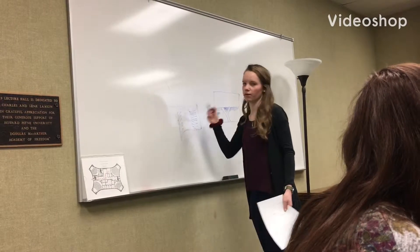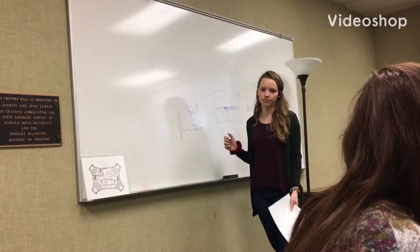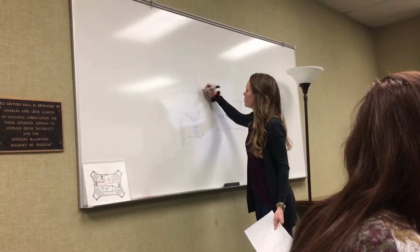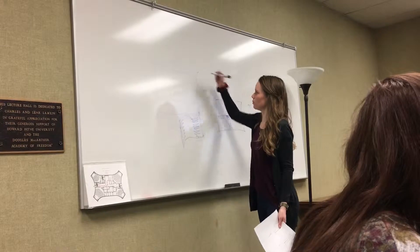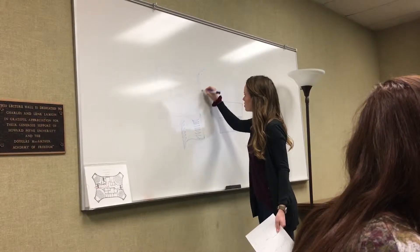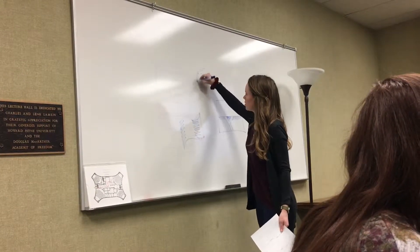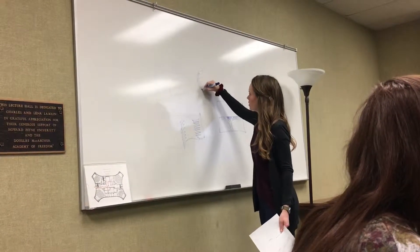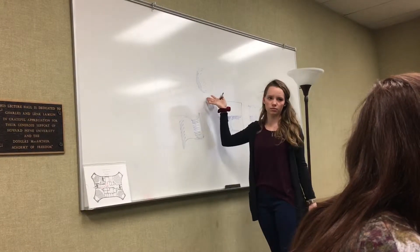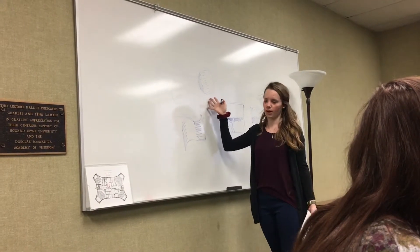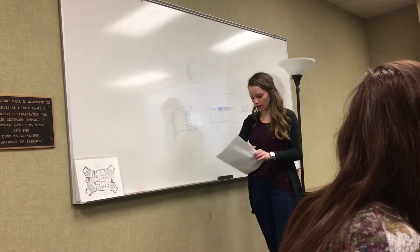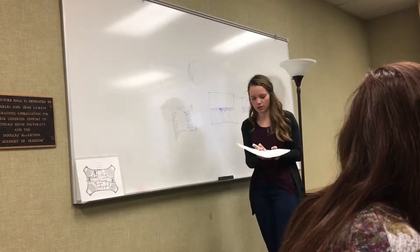When you add value, you get form. So if you have a circle, it's just a circle. But when you add value — shading and tone, a mid-tone that gets darker — it's not a circle anymore, it's a sphere.